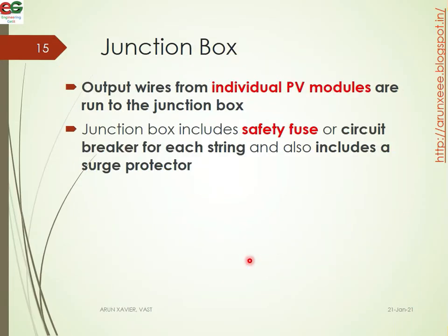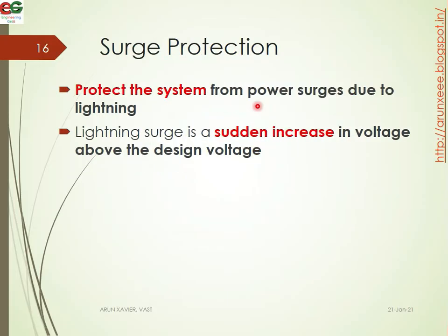Output wires from the individual PV modules are run into a junction box. The junction box includes safety fuses or circuit breakers for each string, and also includes surge protectors. Surge protection protects the system from power surges due to lightning. A surge is a sudden increase in voltage above a certain threshold level.